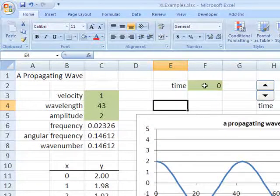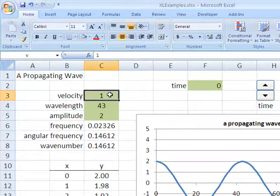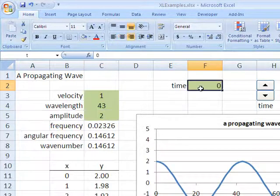The time can also be controlled here, has a value in F2. And by the way, I've named these cells V for velocity, L for wavelength, A for amplitude, and T for time.